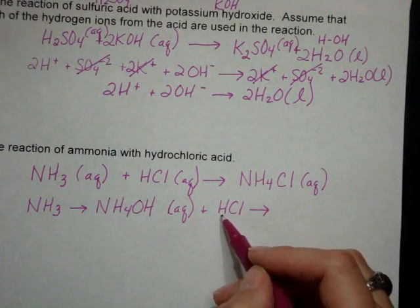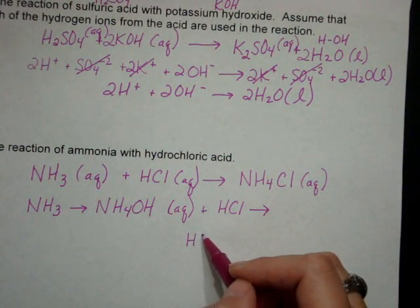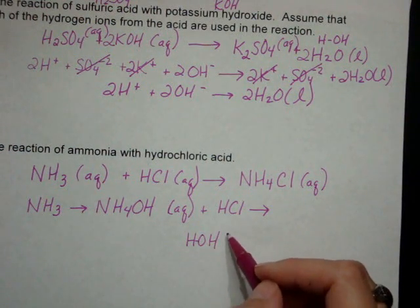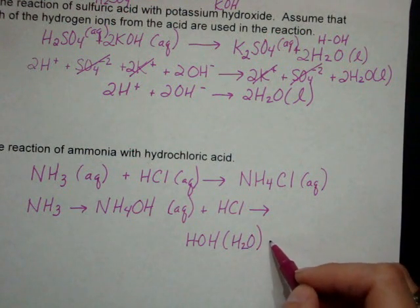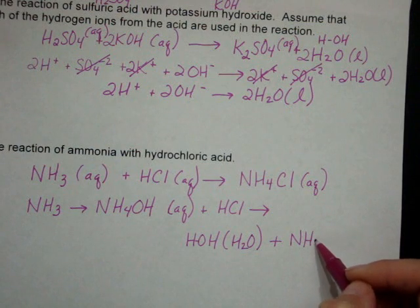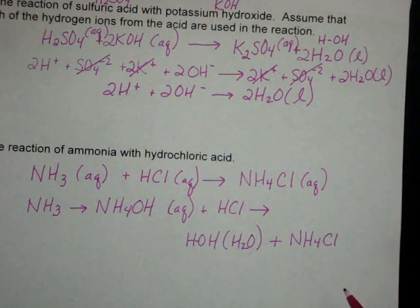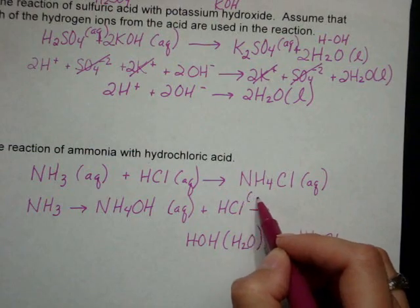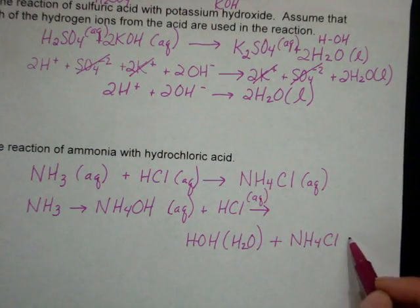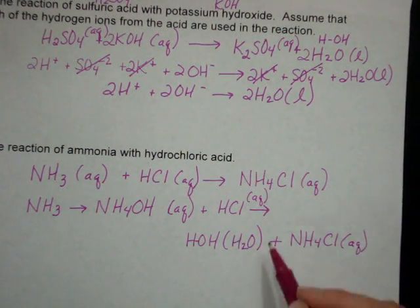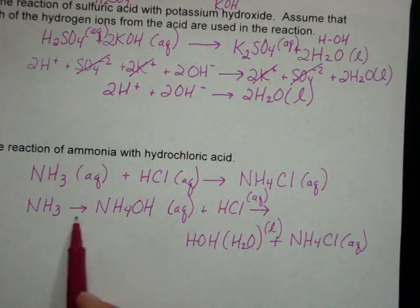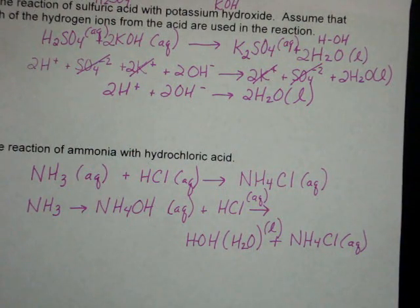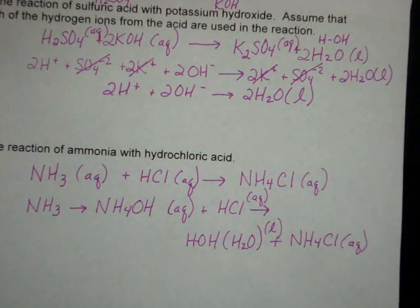So you have your H and OH pair up, which is your water, and then you have ammonium and chloride. HCl is aqueous. Ammonium chloride is aqueous. Water is a liquid. So by treating ammonia like ammonium hydroxide, and we essentially use them interchangeably, it's a lot easier to see what the net reaction is going to be.